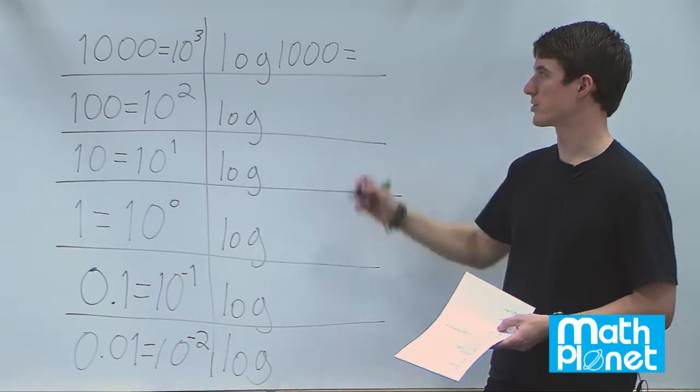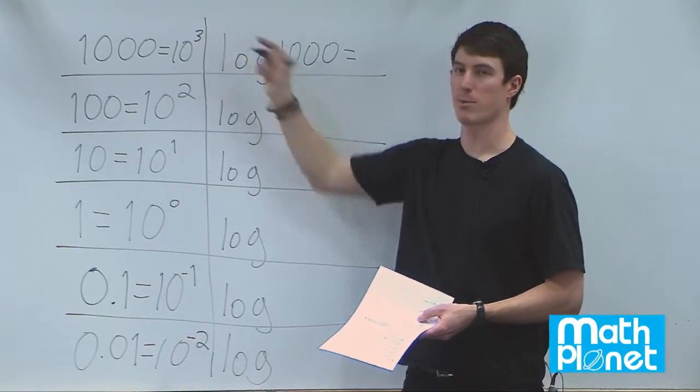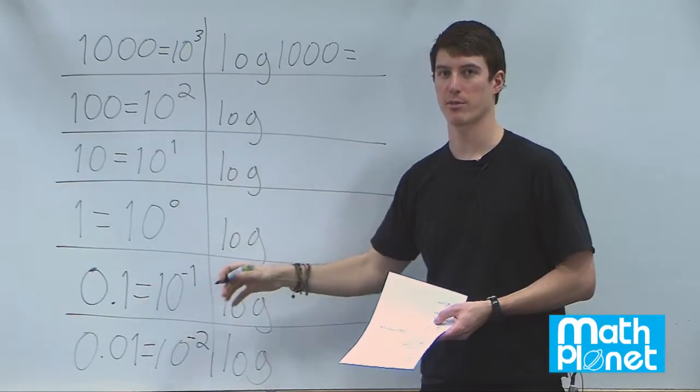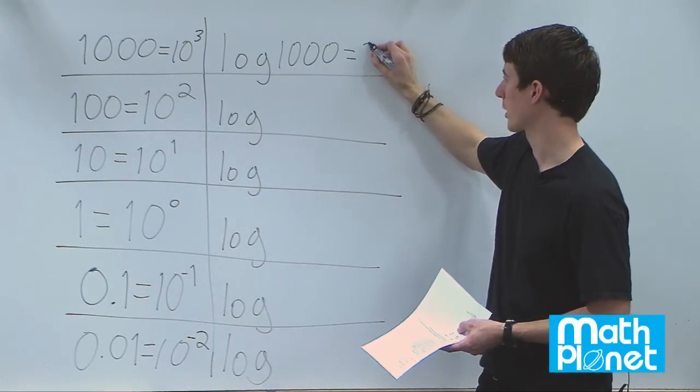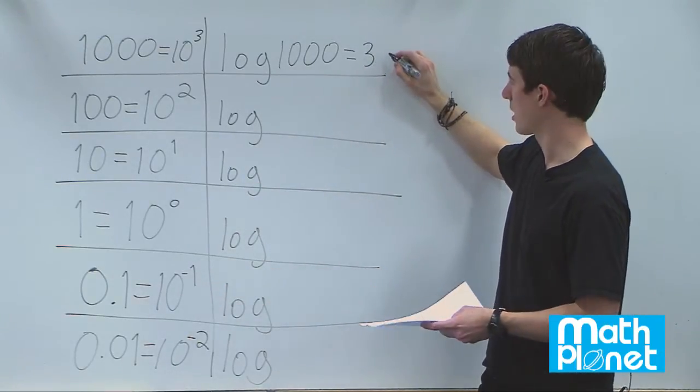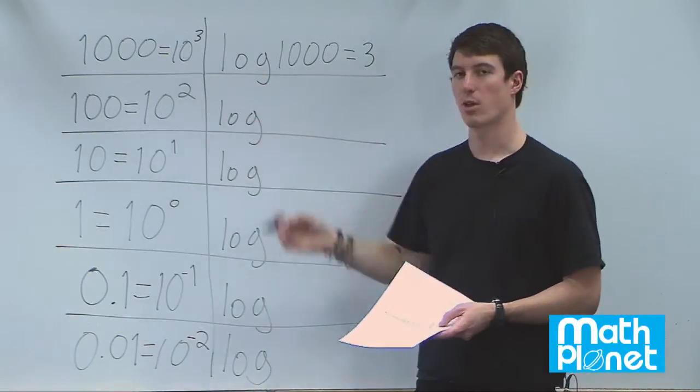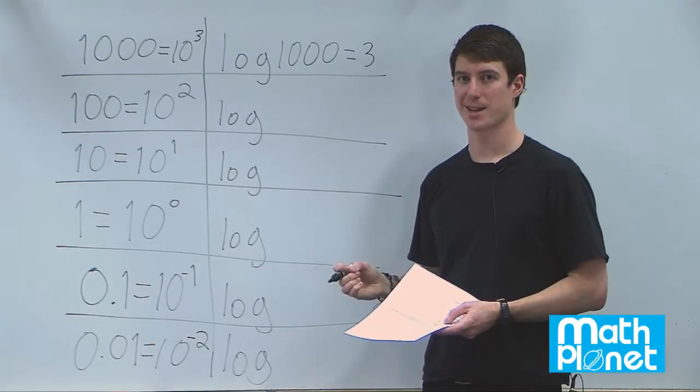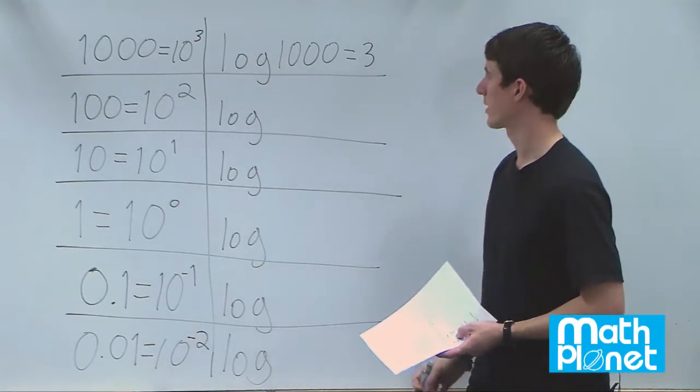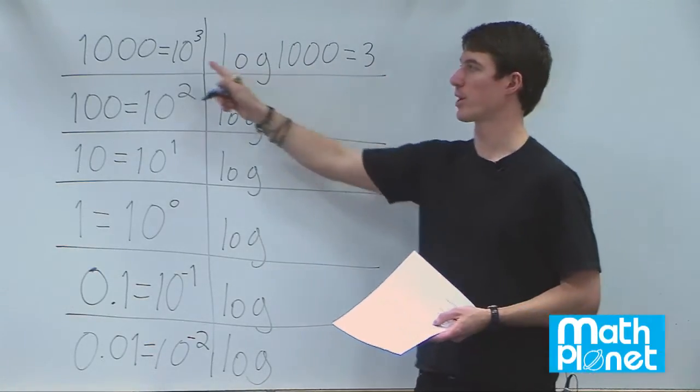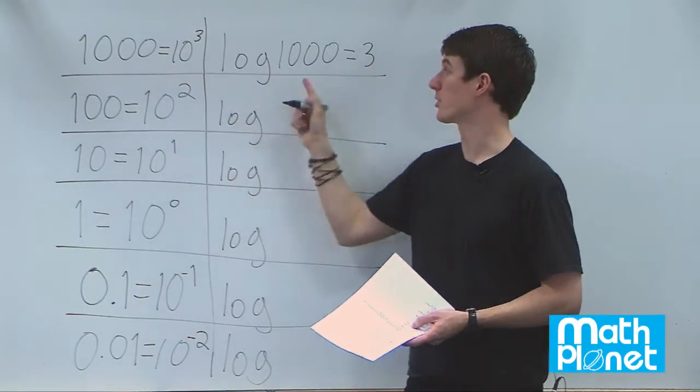Now what we can do there is just say if we have a logarithm of 10 to the power of 3, we can bring the 3 down in front using that logarithm trick. So 3 times log of 10. Now log of 10 if it's a base 10 is just 1. So that's nice and simple and pretty. So this is a nice way to write the exact same information using a logarithm.